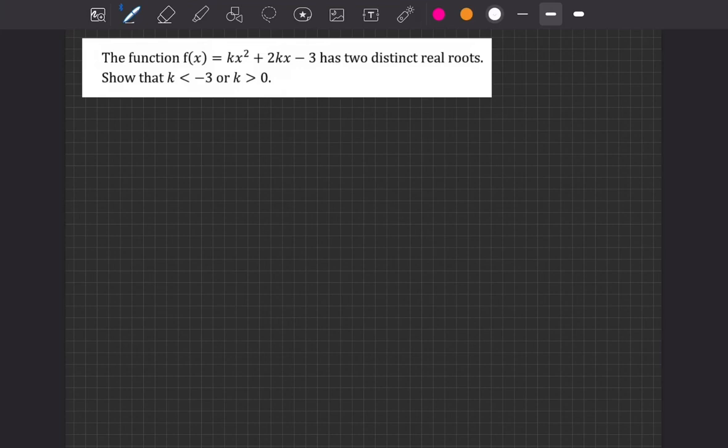Hello. Today I'm going to show you this algebra problem. It's to do with quadratic equations, which we can see from the x squared. Whenever we're talking about two distinct real roots, or anything to do with the amount of roots, that's linking us to the discriminant. So we'll start there.